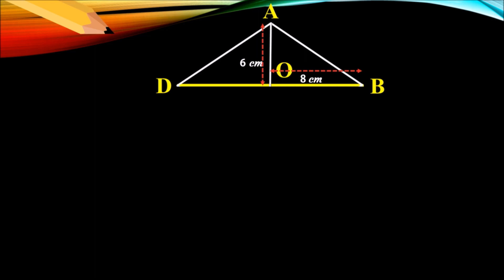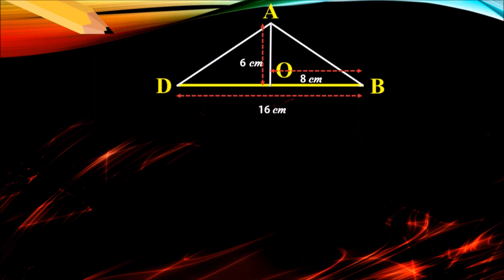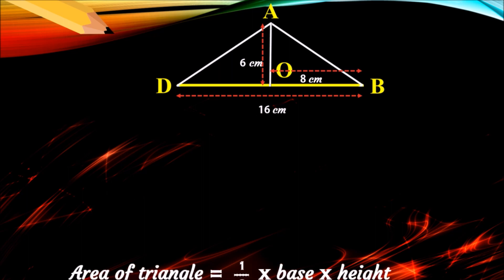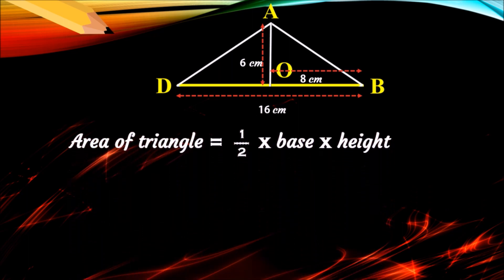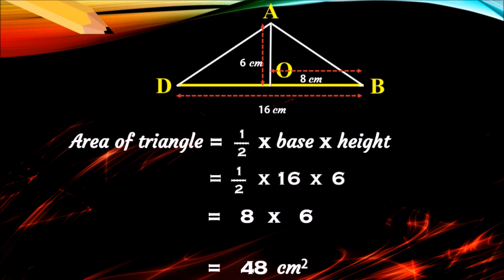We have triangle ADB in which the height is 6 centimeter. OB is half of DB, so 2 times 8 is 16 — DB is 16 centimeter. We can find the area of this triangle using the formula: area of triangle equals 1/2 into base into height, which is 1/2 into 16 into 6.